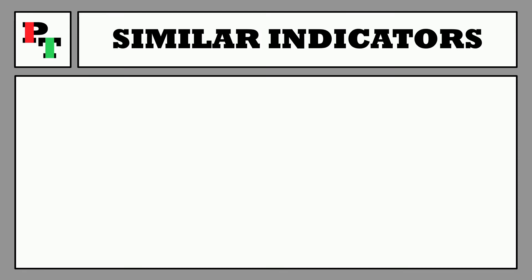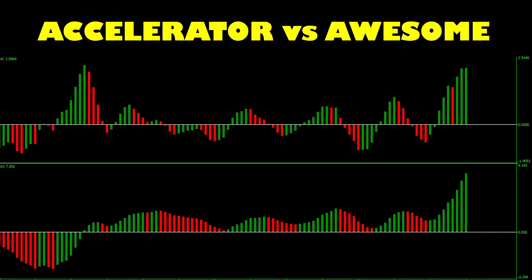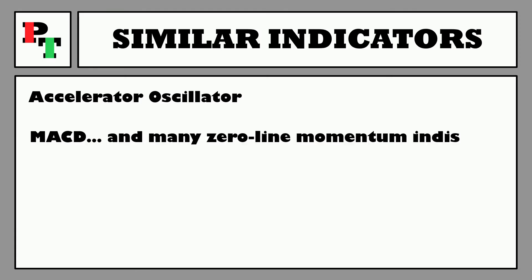The most obvious alternative is the Awesome Oscillator — known for being the dawn of clickbait indicator names. Although the Accelerator and Awesome Oscillators serve different purposes, they use very similar formulas and both present as zero line histograms, making the comparison impossible to ignore. The Accelerator Oscillator will shift across that zero line a lot more than the Awesome Oscillator will. Another very popular zero line histogram crossover indicator is the MACD — another momentum measurer — so check out our video on that.